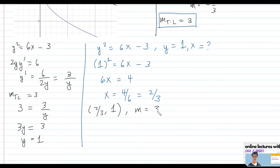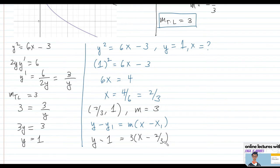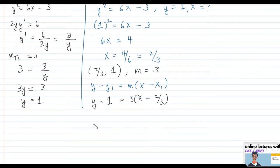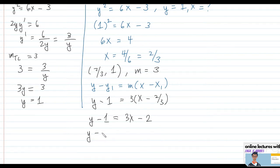Using slope-point form with point (2/3, 1) and slope 3: y minus 1 equals 3 times (x minus 2/3), which gives y minus 1 equals 3x minus 2. Rearranging, we have y minus 3x plus 1 equals 0. This is the equation of the tangent line.